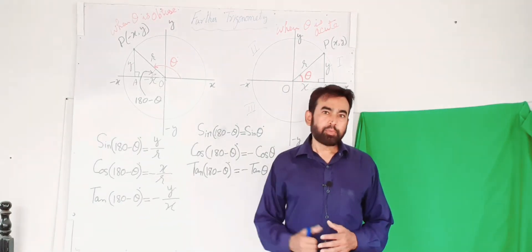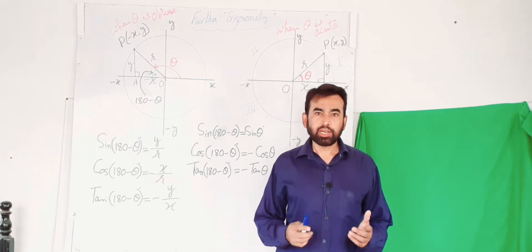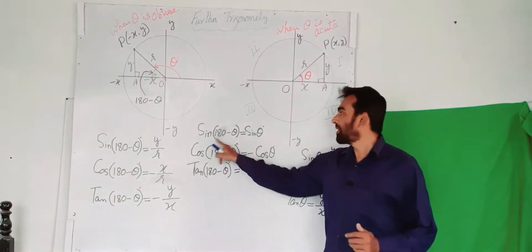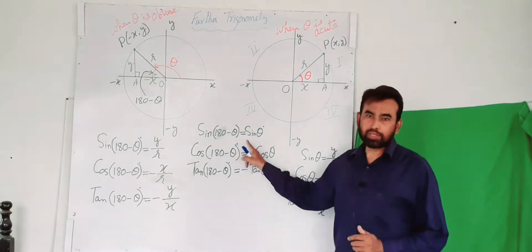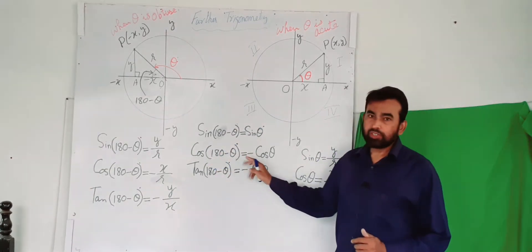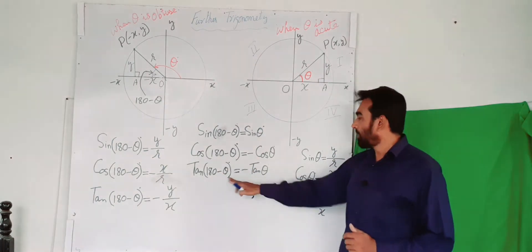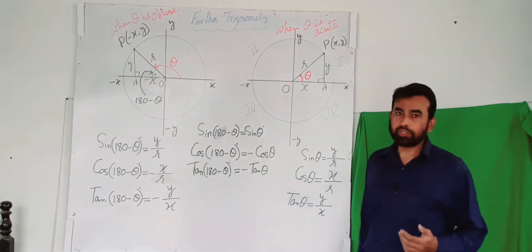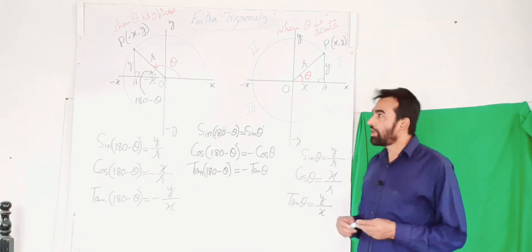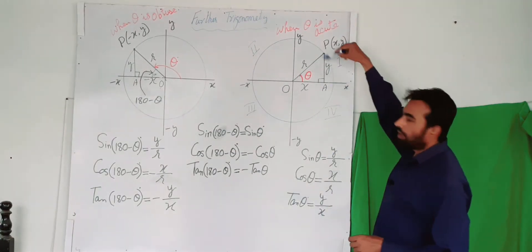Bismillahirrahmanirrahim. This is a topic of further trigonometry in which I am going to explain how sin(180 - θ) is equal to sin θ, cos(180 - θ) is equal to minus cos θ, and tan(180 - θ) is equal to minus tan θ. To understand this, we have to consider this diagram.